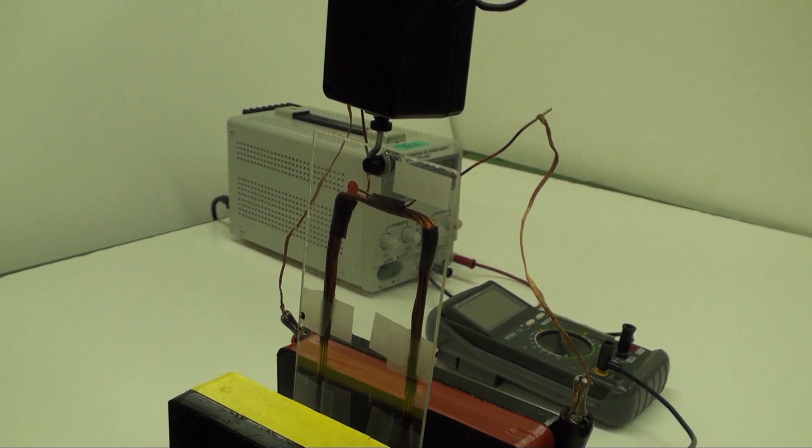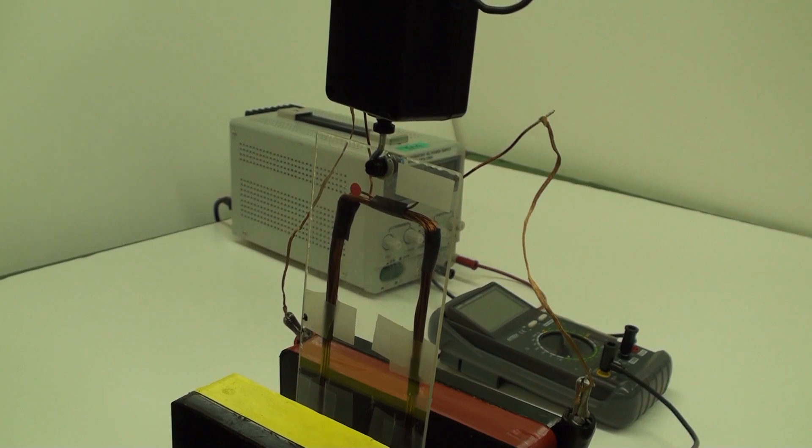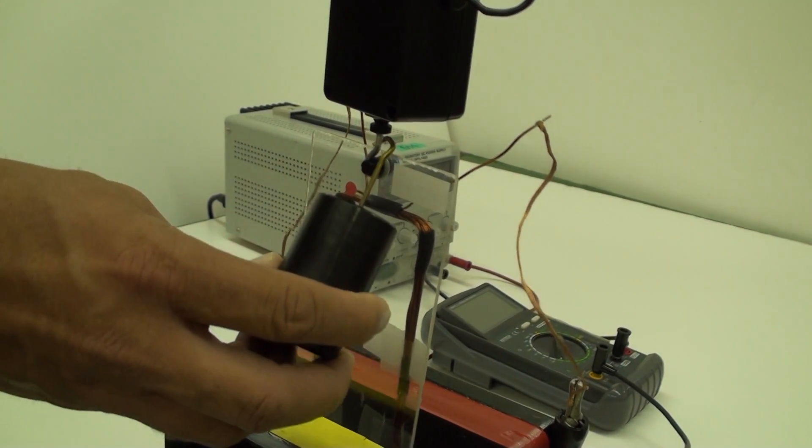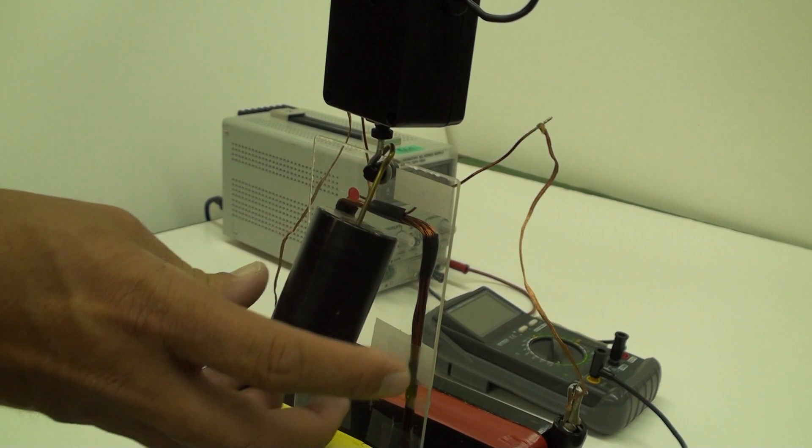As always, the force sensor must be calibrated. First take a zero reading with the coil hanging to nullify its weight out of the experiment. Then add a half a kilogram, call it 4.9 newtons, and take a second reading.